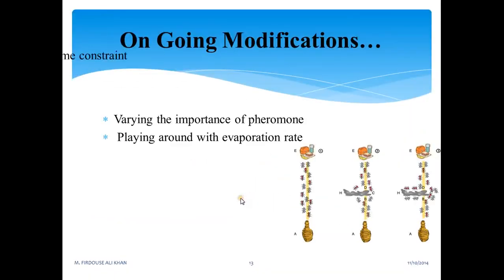Ongoing modifications or ongoing research on ACO: people are varying the importance of pheromone and finding out what changes are happening. They are playing around with evaporation rate, they are adding time constraints, and also adding obstacles. You can see here an example: adding obstacles between nest and food.